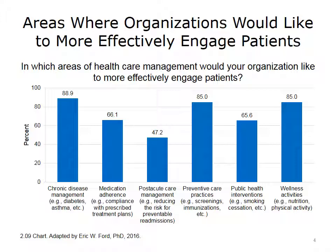One hopeful sign is that preventive care practices, such as screenings and immunizations, are on the rise. Public health interventions — things like smoking cessation and weight loss — try to reduce bad habits and increase good ones. Lastly, wellness activities, often employer-based, are growing. Employers are one of the payer groups that underwrite the healthcare most of us receive, so wellness is of key interest to those types of organizations.